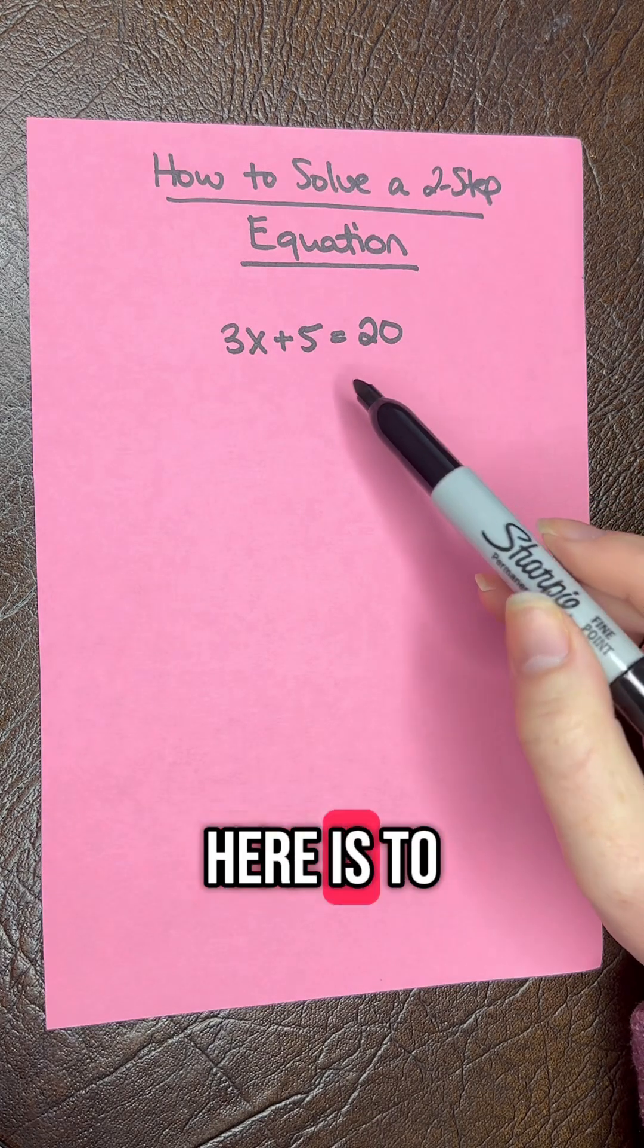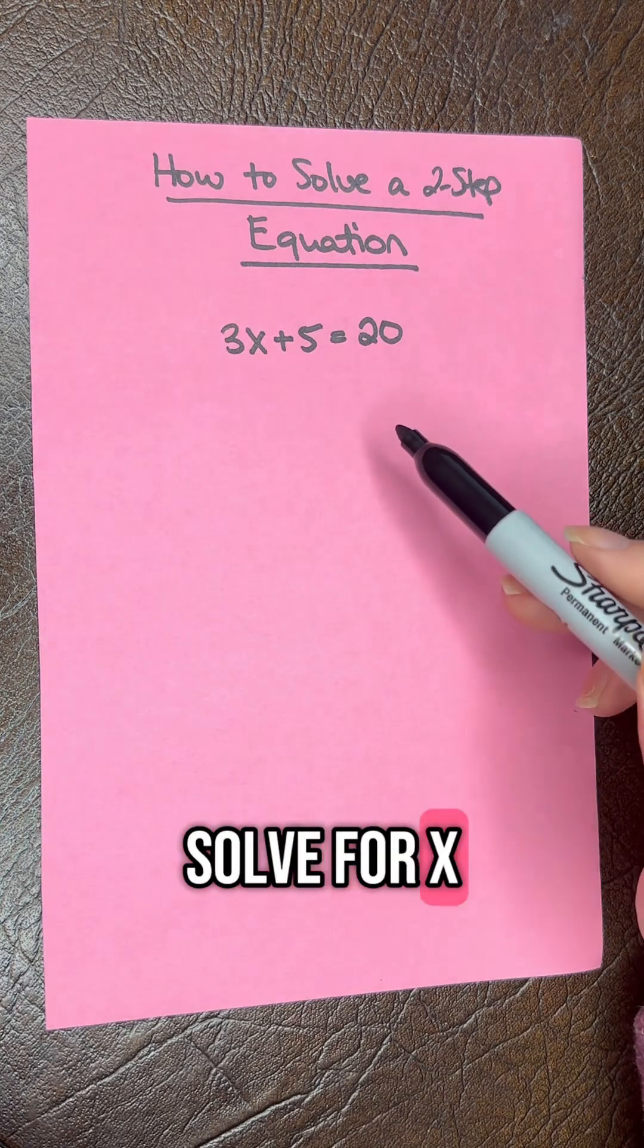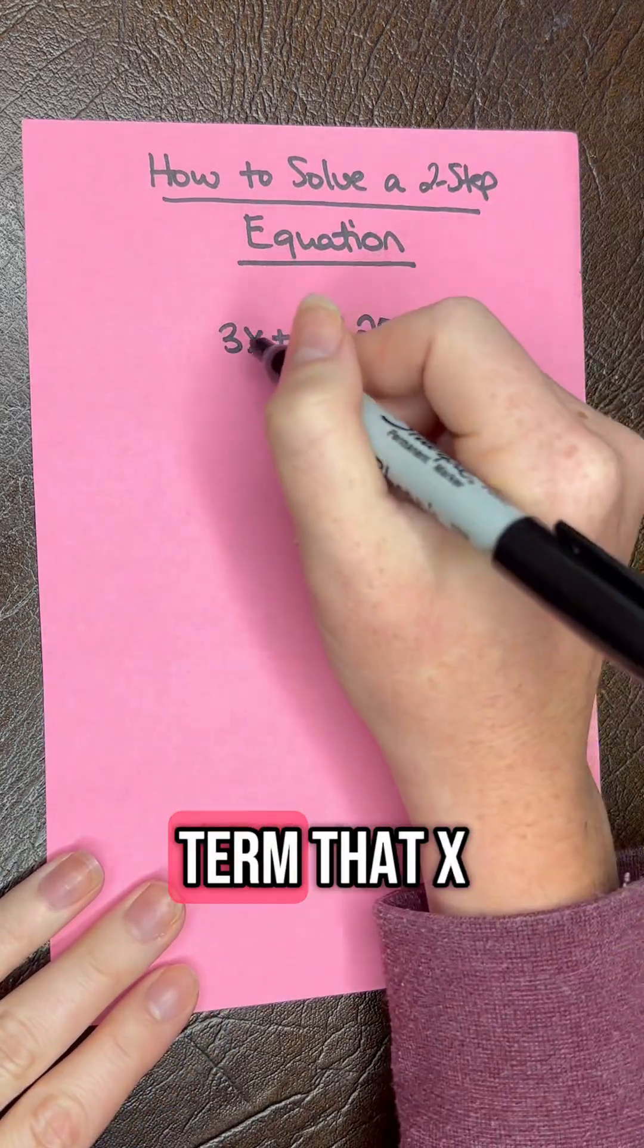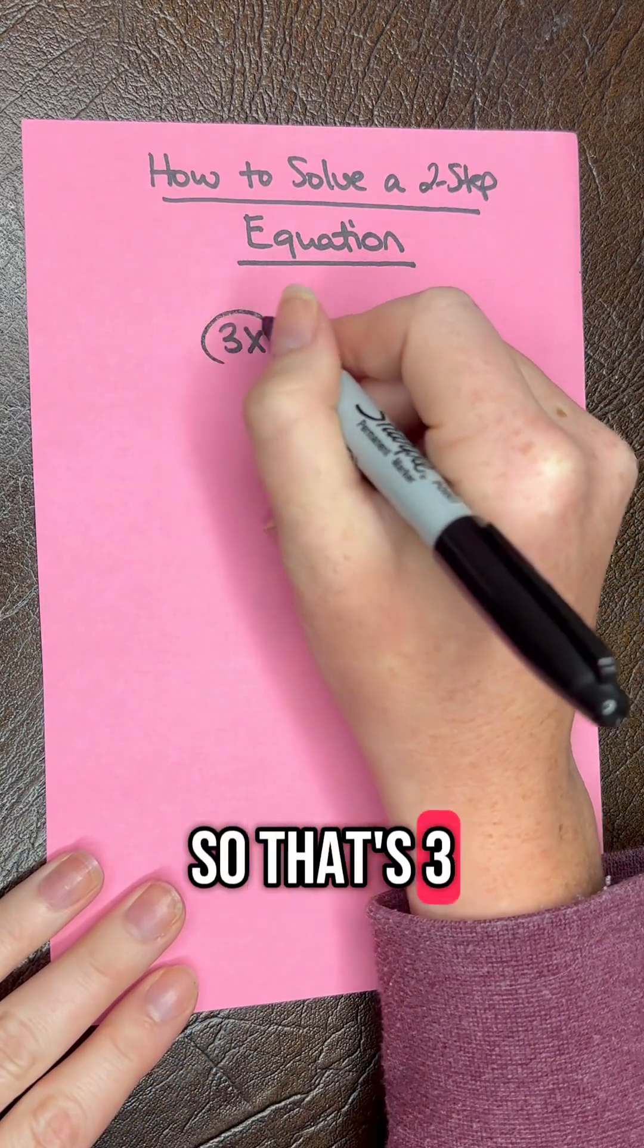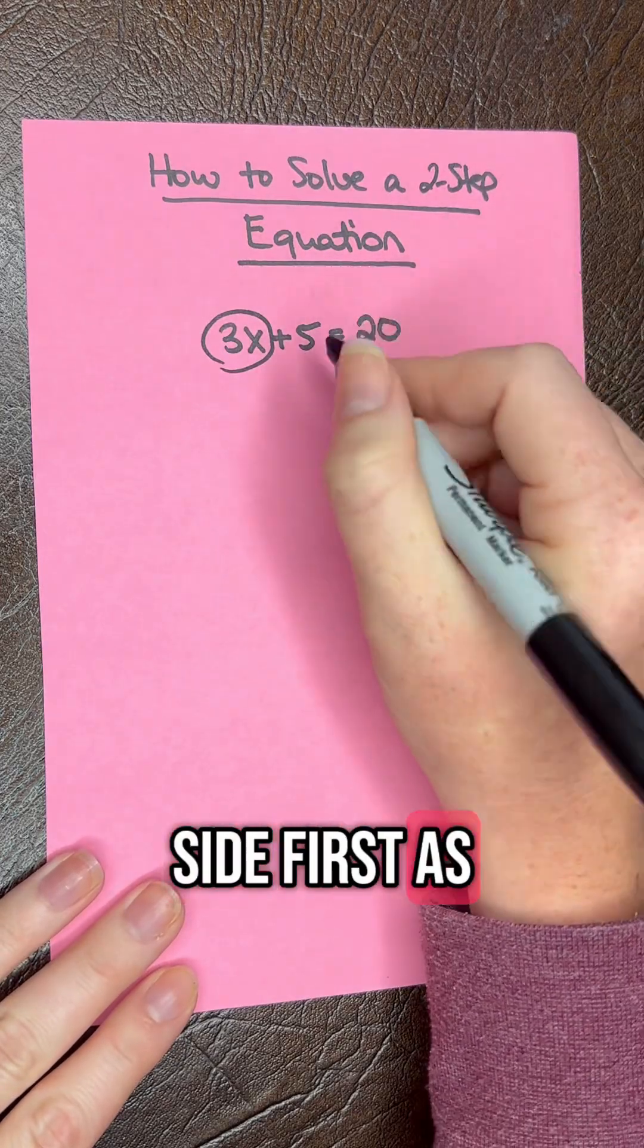Our goal here is to get x by itself so we can solve for x. We need to isolate the term that x is in, so that's 3x here. We need to get this 5 to the other side first as step 1.